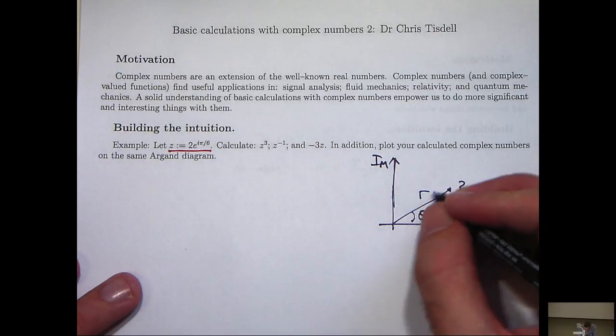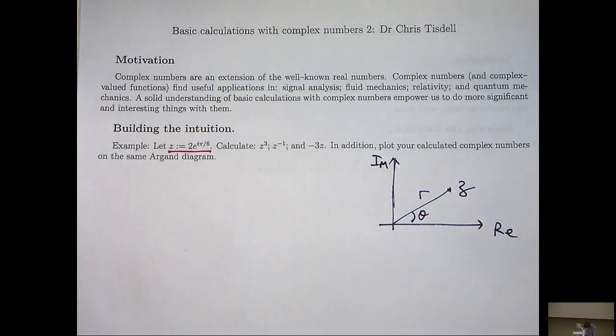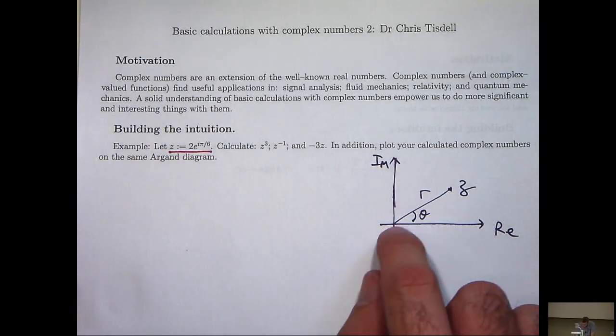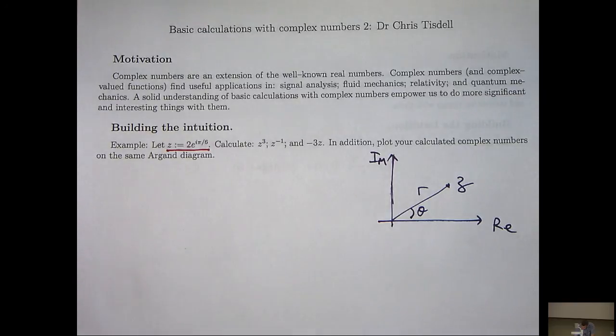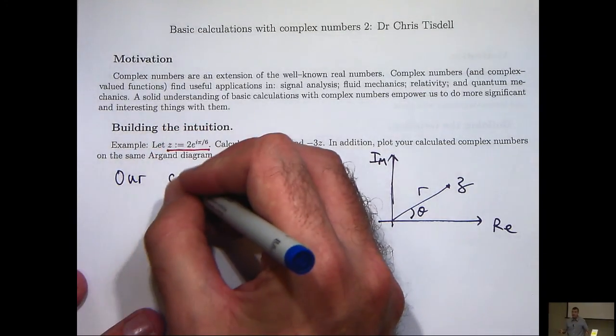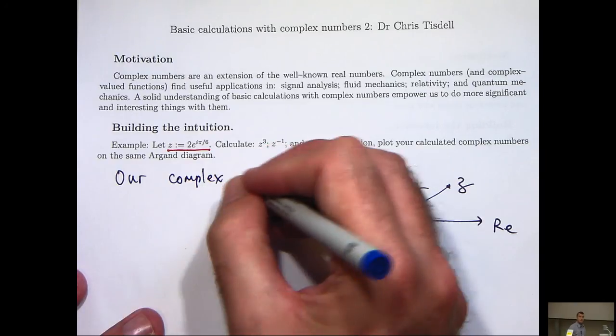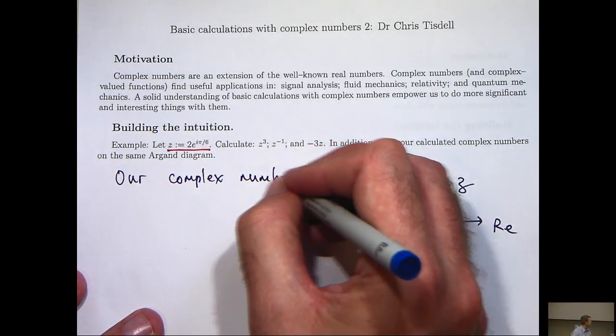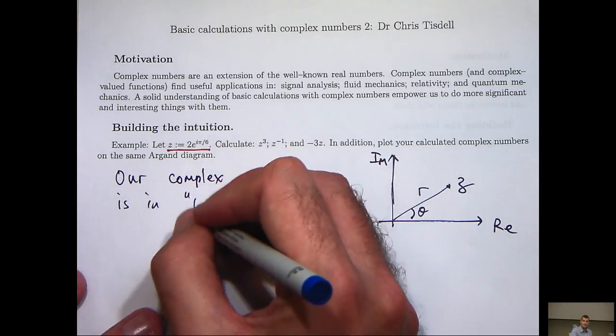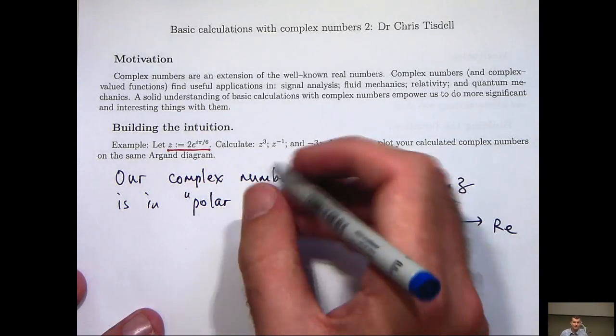So essentially, the angle here and the length here can be used to write any complex number we like. Now, the beautiful thing about the polar form is that it greatly simplifies calculations involving multiplication and powers.